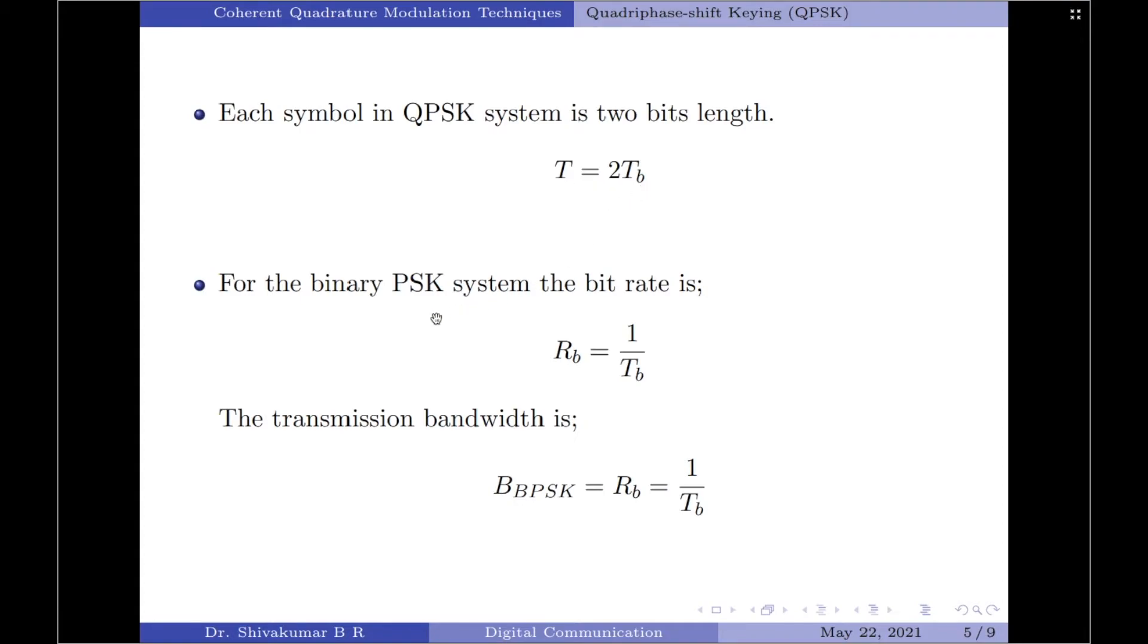We know that for a binary PSK system, the bit rate and the bit duration are related by the equation Rb equals 1 divided by Tb. So the transmission bandwidth of the binary PSK system is equal to Rb equals 1 divided by Tb.